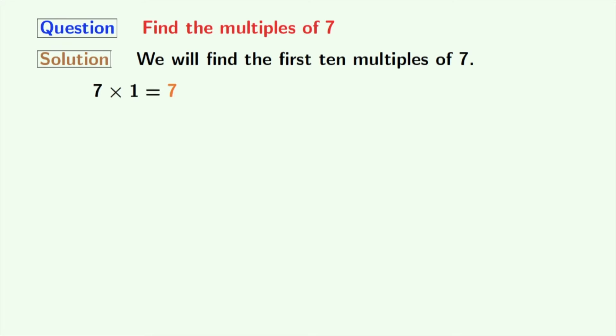So, let's move. Multiplication of 7 and 1 gives us 7. Multiplying 7 with 2, we get 14.